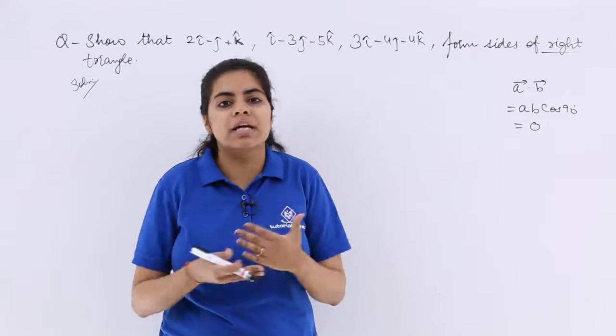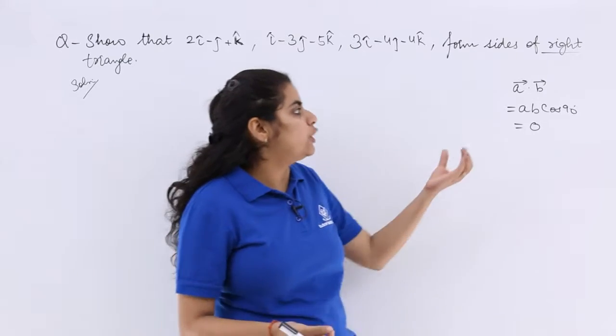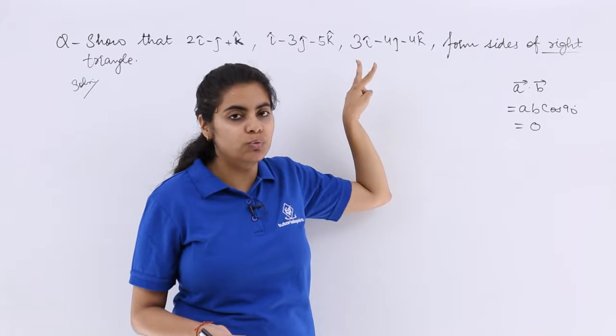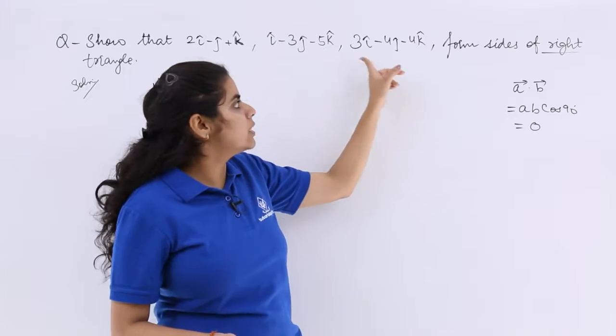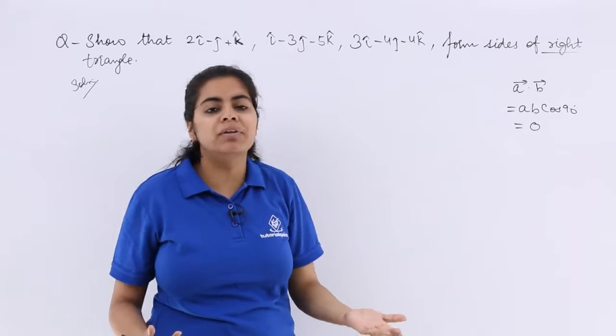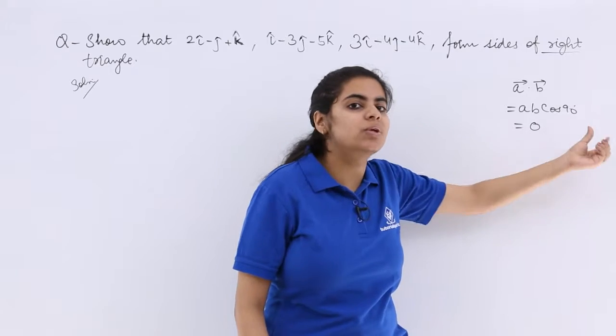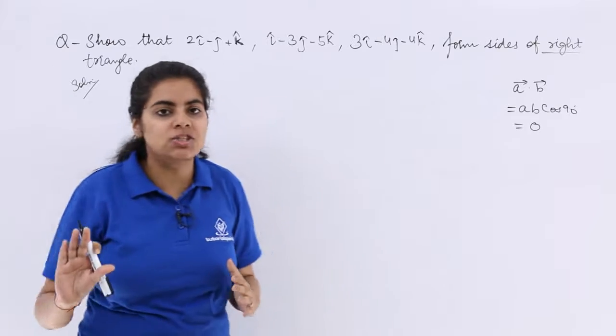So definitely there is one pair of sides perpendicular. Now if I get a dot product of any of these two vectors as 0 and I know their magnitude is non-zero, so definitely the angle, the theta, is 90 degrees which means perpendicular. So let's start doing the question.